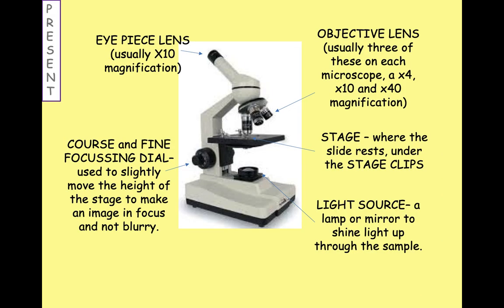The light microscopes we use in school look a little bit like this. With your pen and paper, I suggest you jot down the names of the different parts of the light microscope on your screen and maybe just one or two words about what each part does. I'm going to go through each one as well. One of the most important pieces of a light microscope is the eyepiece lens — it's called the eyepiece lens because that's where your eye goes, and you look through it down the microscope.